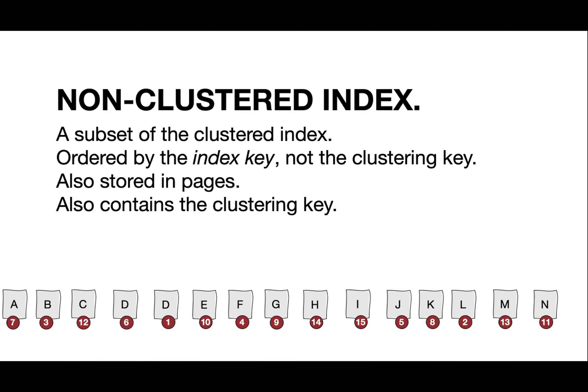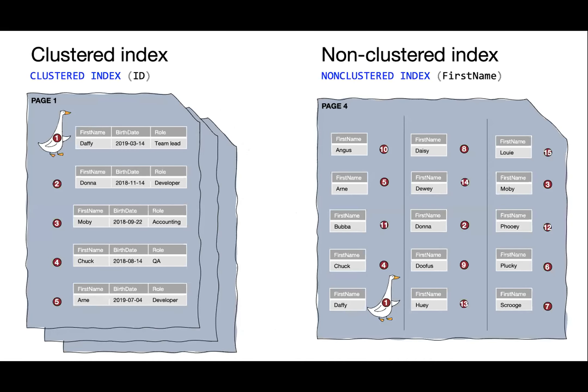To visualize: this is the clustered index we had before. Notice how we use lots and lots of pages to store it because we need to store every piece of information in the table — you might have like a hundred columns in a super wide table. But if we just index on first name, we will sort the non-clustered index on first name and include just the clustering key, so that if we need one more piece of information we can use that clustering key to look up the same record in the clustered index.